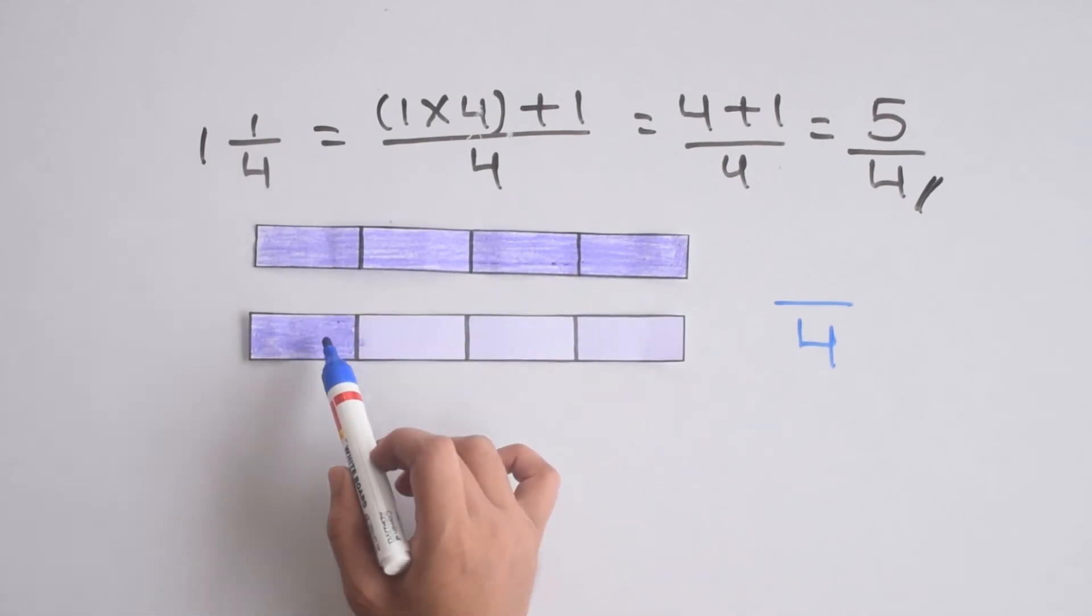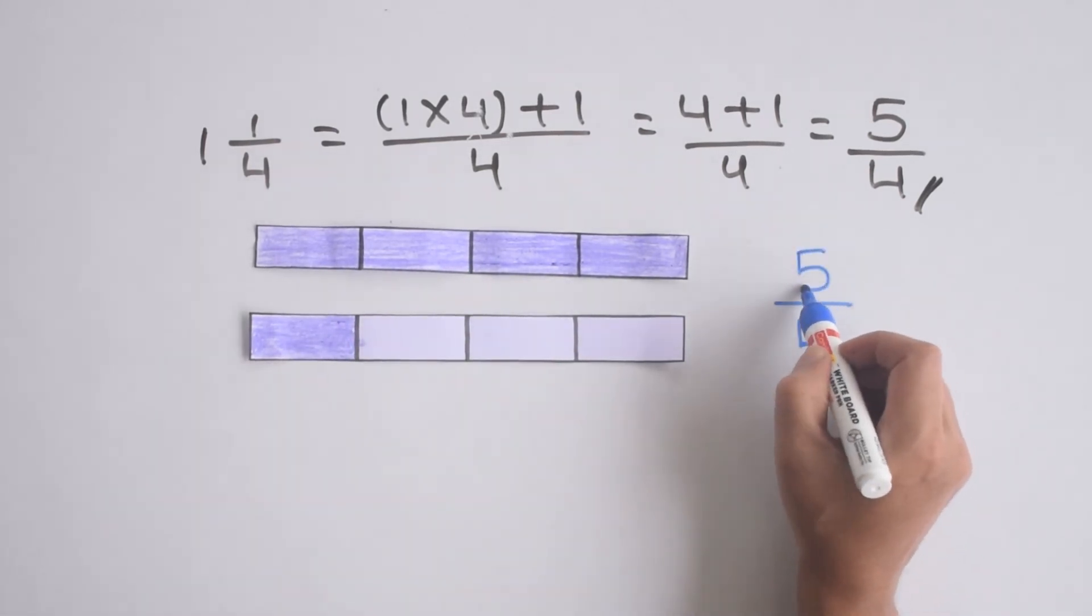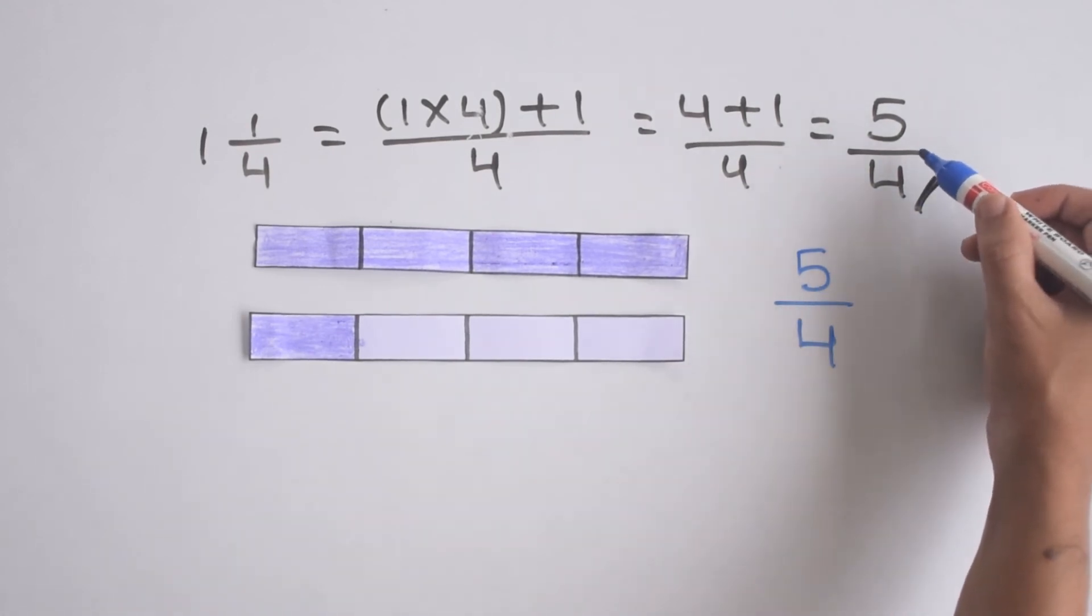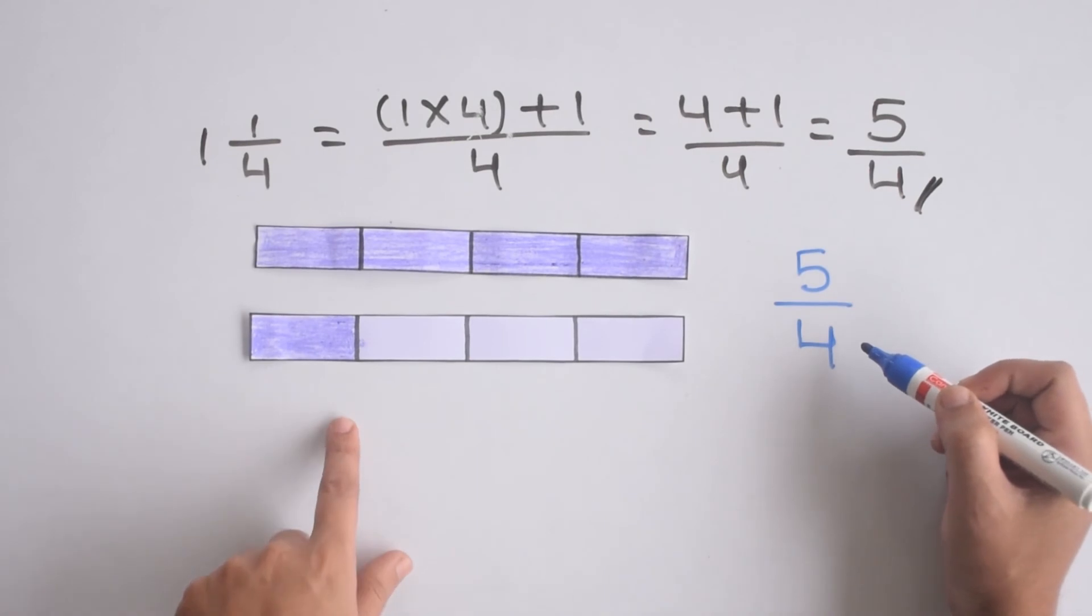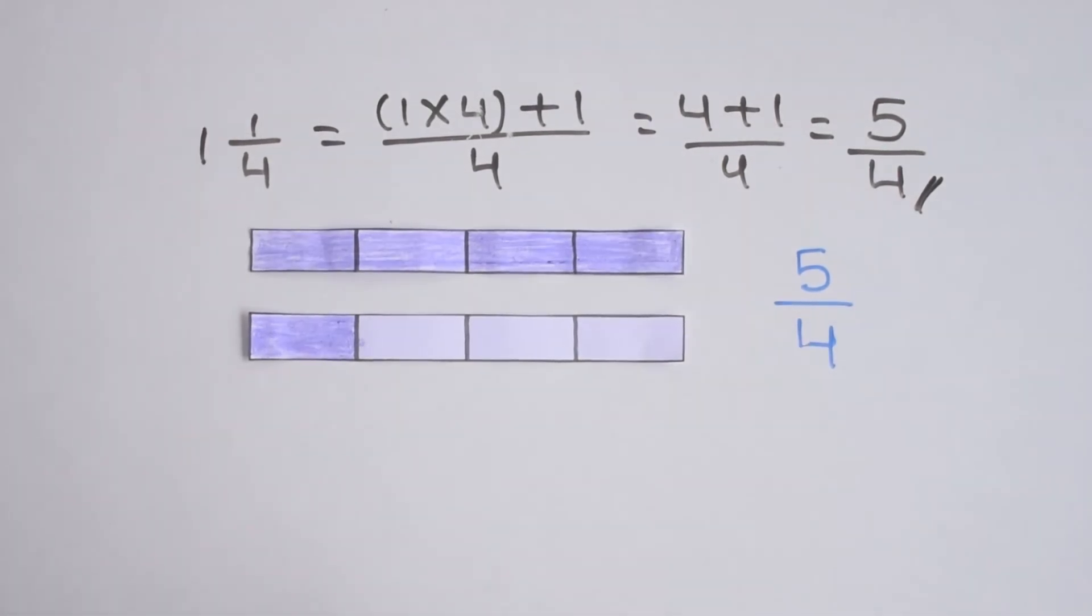2, 3, 4, and 5. So 5 parts are colored. We get the same answer, 5/4, using the procedure as well as using the paper strips. Now we'll understand how this procedure works.